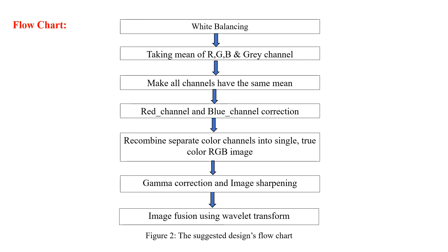Later, the resultant image is subjected to gamma correction in order to adjust the contrast values of the image for a specific value of gamma. Image sharpening of the combined channel image is processed by means of image masking procedure. Finally, the image fusion process is done by using discrete wavelet transform to obtain the final fused output image.